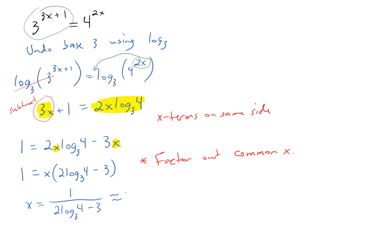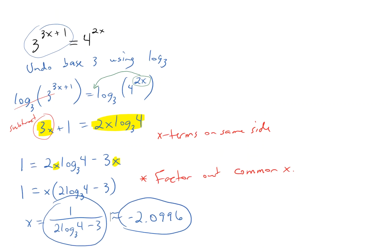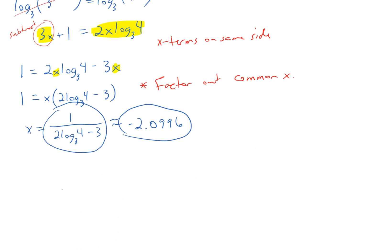Which, if you put in the calculator, should be the same thing. Negative 2.0996. So, go back and compare both of these. Make sure you understand the similarities and differences. And the big thing here is, when you've got two different bases, you just pick one to get rid of, and then use a logarithm property on the other side. Undo one base. Use log law on other side. All right. Good luck.